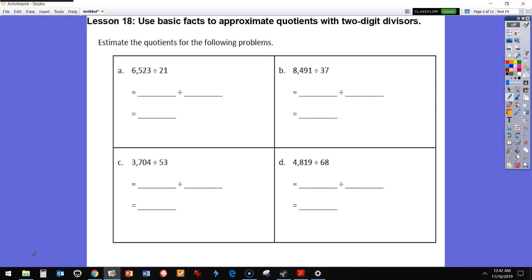So lesson 18 is very similar to lesson 17. We will use basic facts to approximate quotients with two-digit divisors. Let's look at our divisors. So we have two-digit divisors. We have 21. We're going to round that to 20, and then we're going to look at our dividend and make it something that's a basic fact.